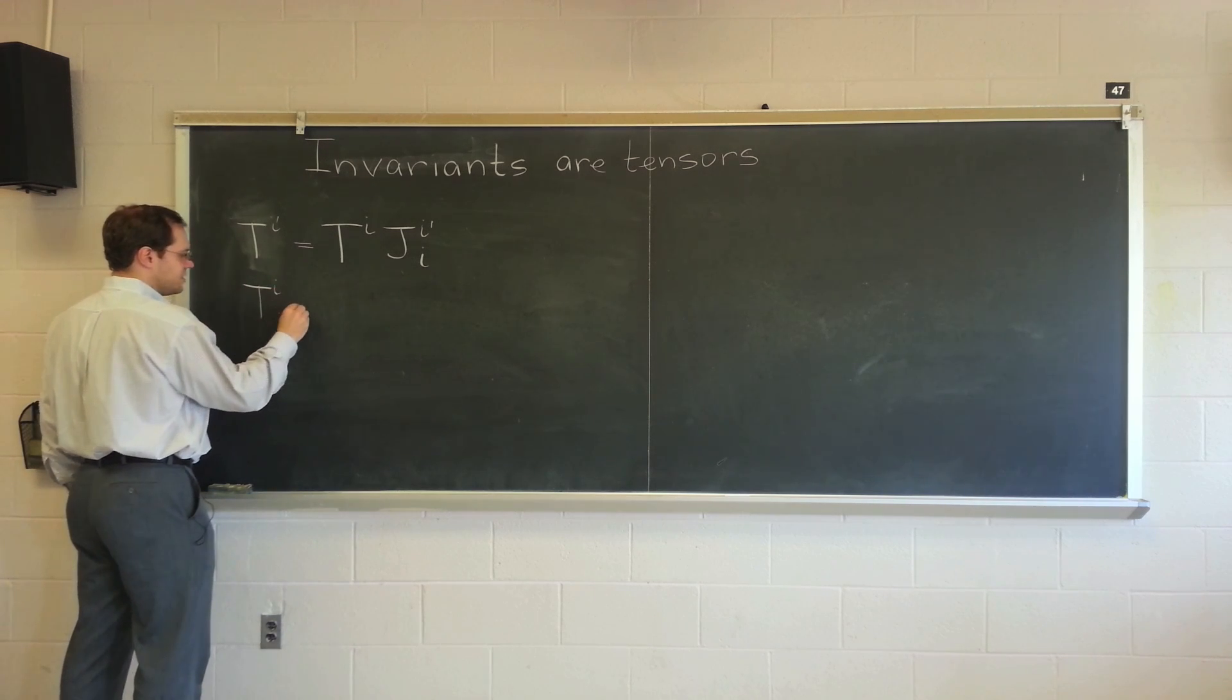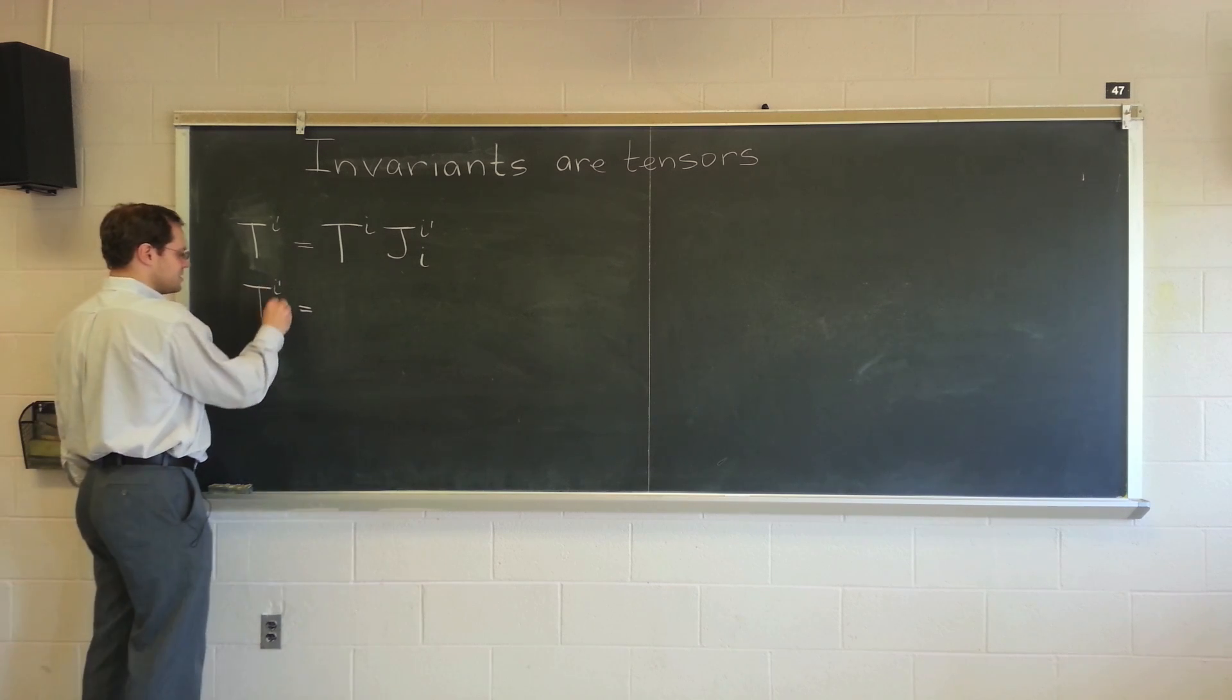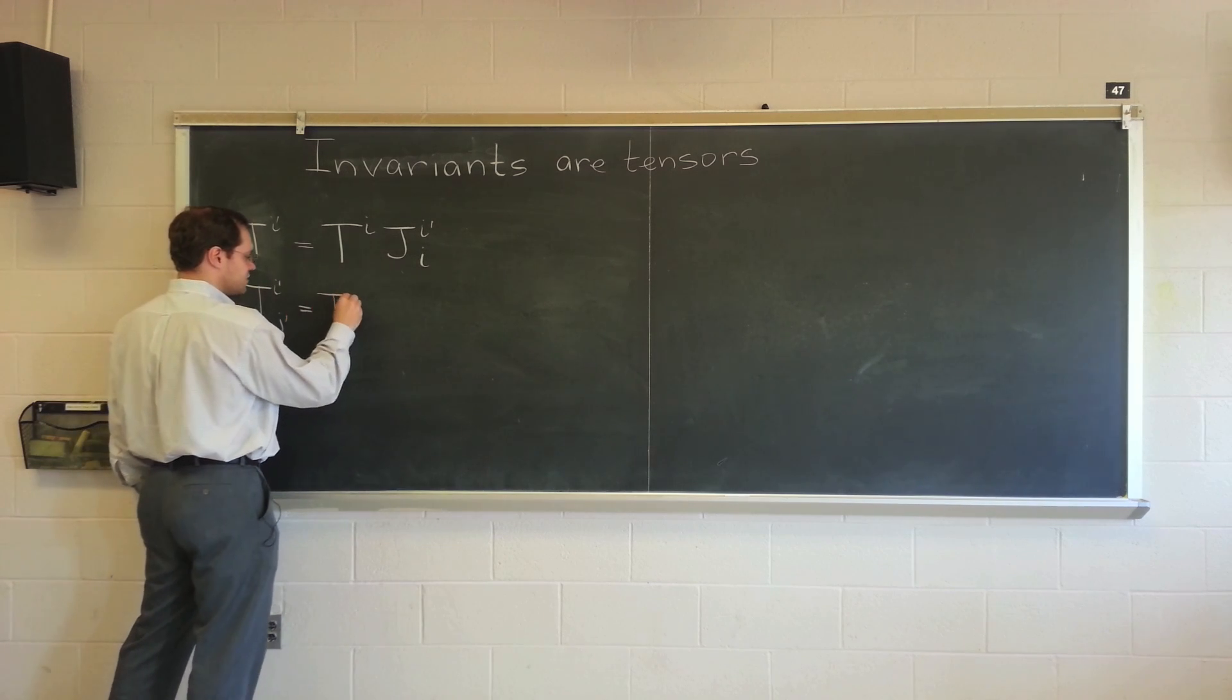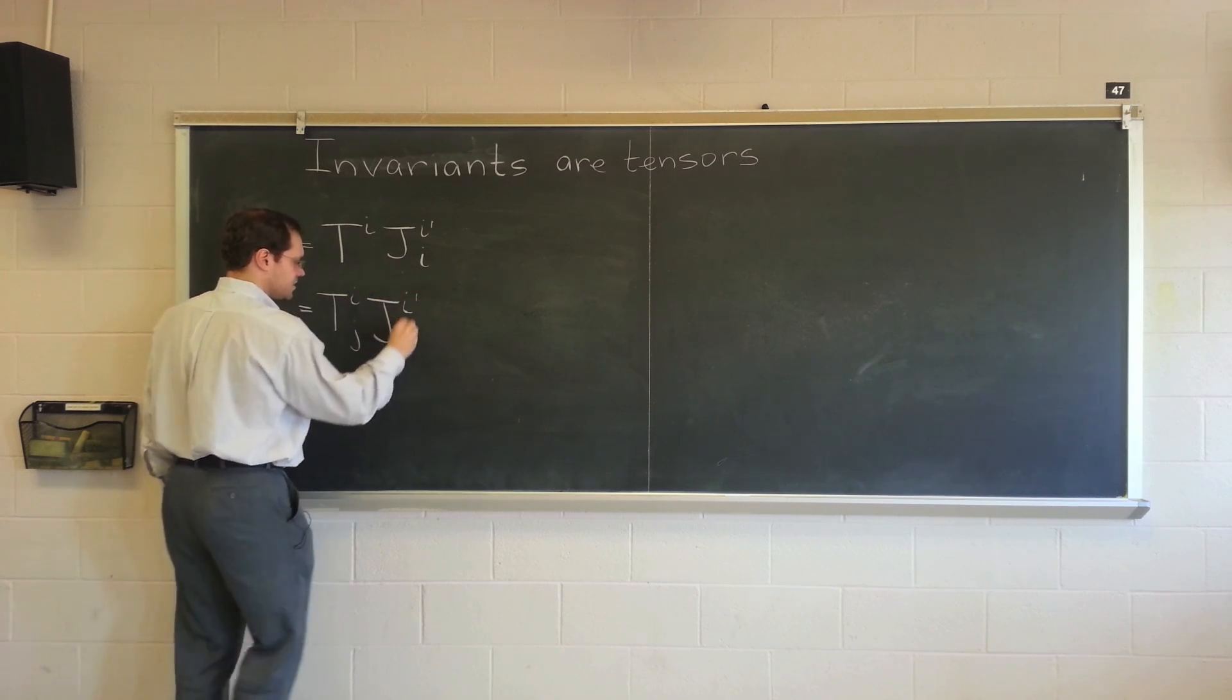And another variant, T upper I lower J, is called a second-order invariant if from one coordinate system to another, it transforms according to the rule that you see here.